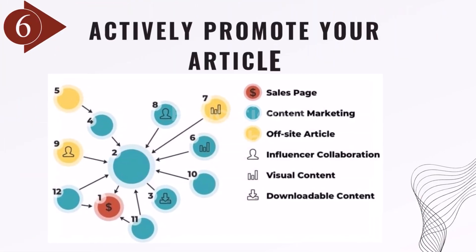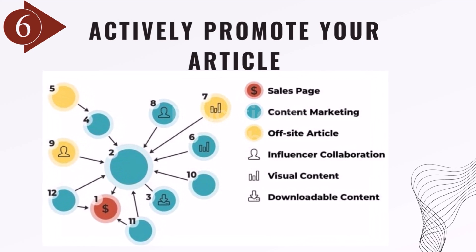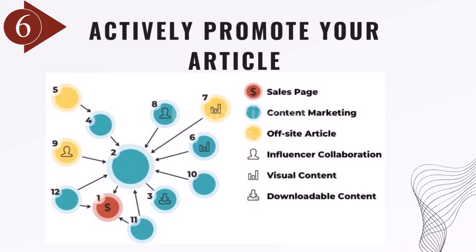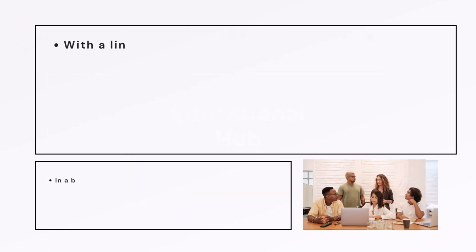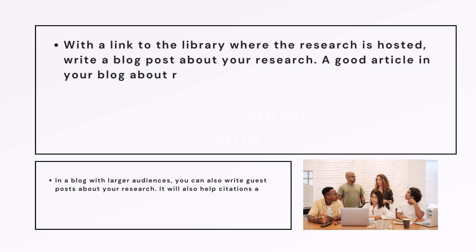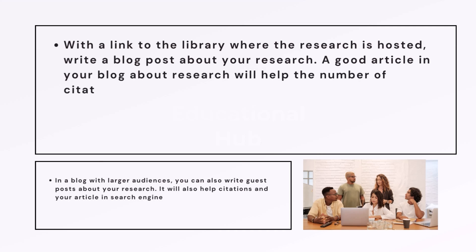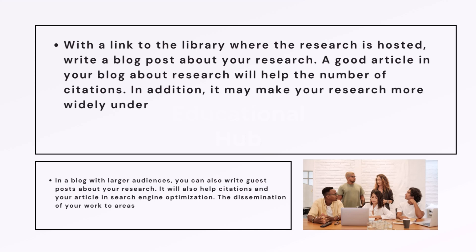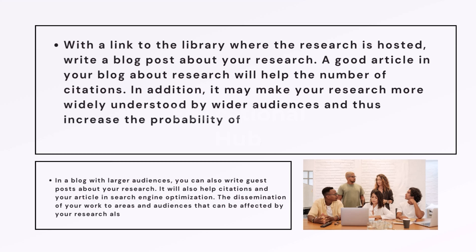Step 6: Actively promote your article with a link to the library where the research is hosted. Write a blog post about your research — a good article on your blog about research will help increase the number of citations. In addition, it may make your research more widely understood by wider audiences and thus increase the probability of its use. You can also write guest posts about your research on blogs with larger audiences, which will also help with citations and search engine optimization. The dissemination of your work to areas and audiences that can be affected by your research also helps.